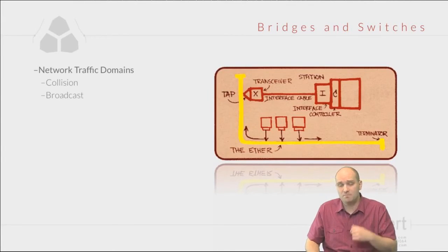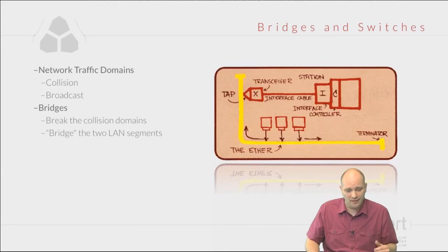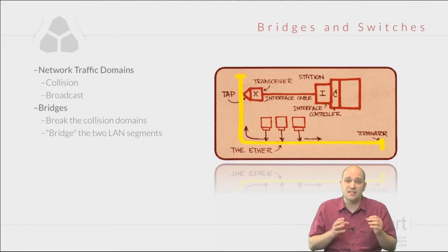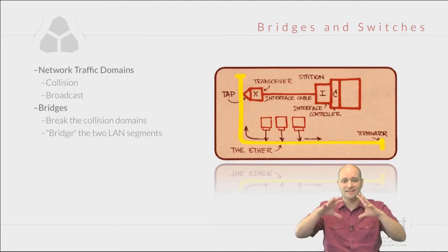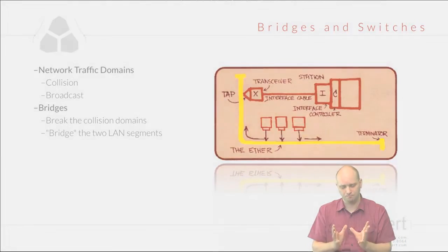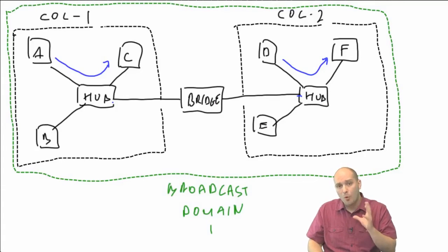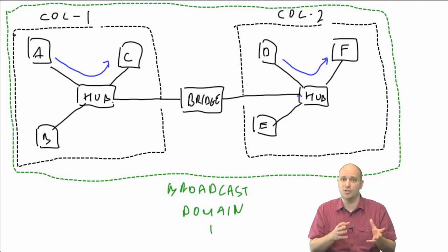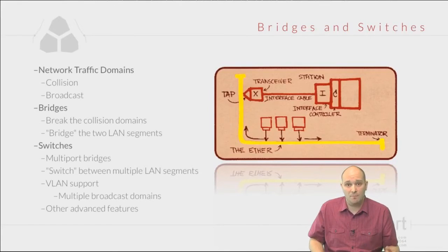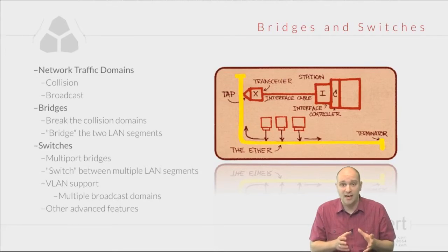Bridges break apart collision domains while maintaining the same broadcast domain across. If we wanted more than two collision domains — say three or four — we would need a bridge-like device with more than two ports. This is what switches are: switches are multi-port bridges, designed to switch between multiple LAN segments.